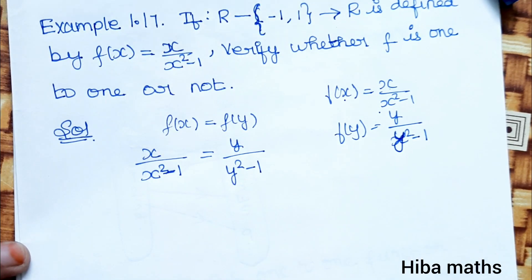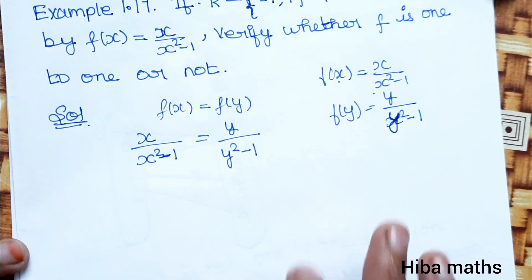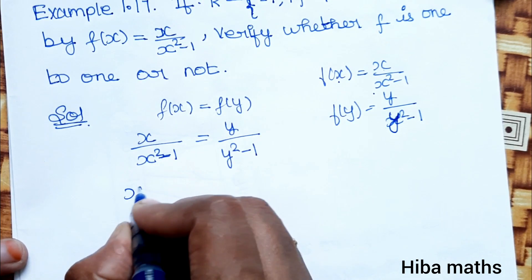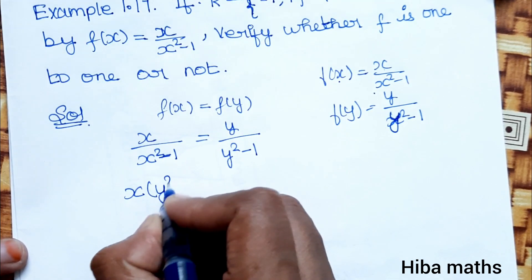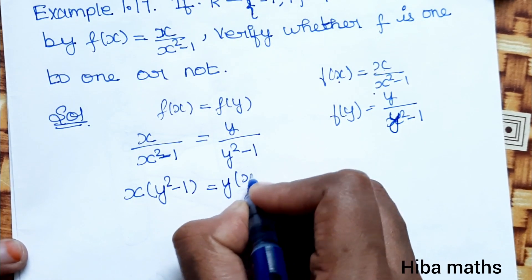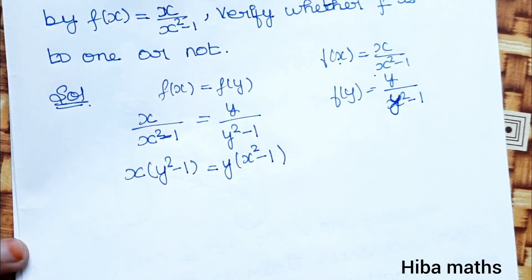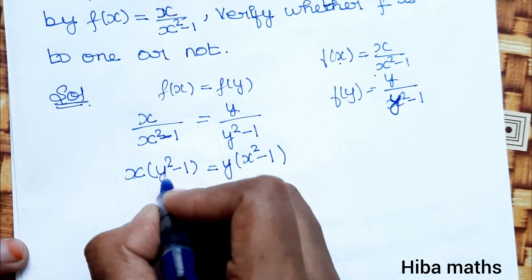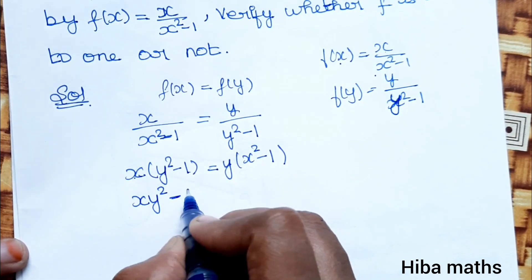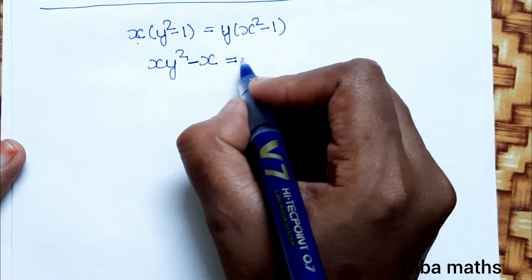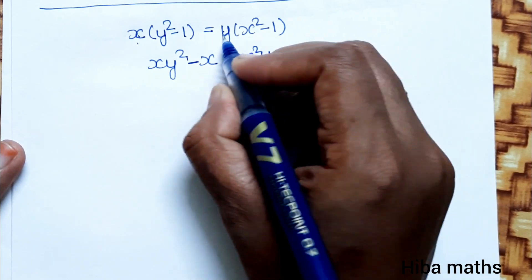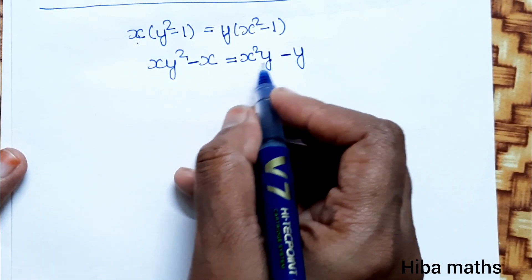We will solve this equation. Cross-multiplying: x times (y squared minus 1) equals y times (x squared minus 1). Expanding the brackets: x times y squared minus x equals y times x squared minus y, giving us xy squared minus x equals x squared y minus y.